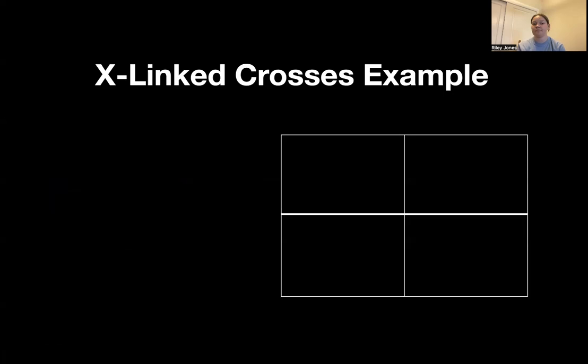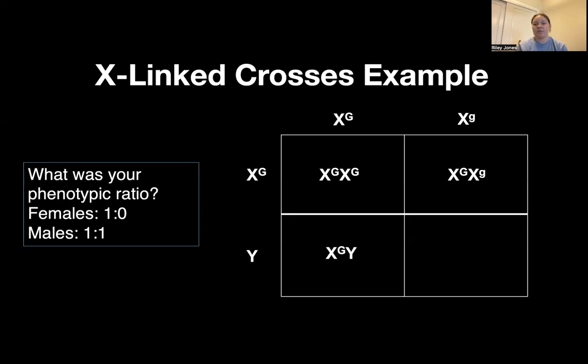Hopefully that makes sense. So our phenotypic ratio for females was one to zero, because they're always going to have green eyes since the dominant trait is overpowering and there's no homozygous recessive in this specific cross. For males, it's one to one, and that's specifically because there's only one X in this cross — so that recessive gene comes through stronger than it would in females. That is all I have to say for today's lecture. Hopefully that made things a little bit easier to understand. If you have any more questions, please let me know. If you have any late work that you want to turn in, please email me — I'm happy to open up any of those late assignments, except for the midterm. I hope you all have a great rest of your week and a good spring break. See y'all later.